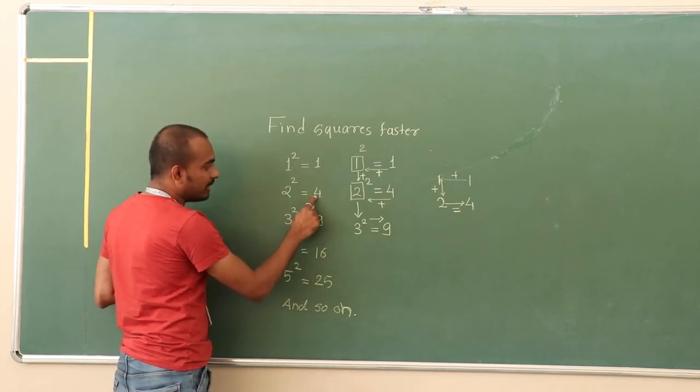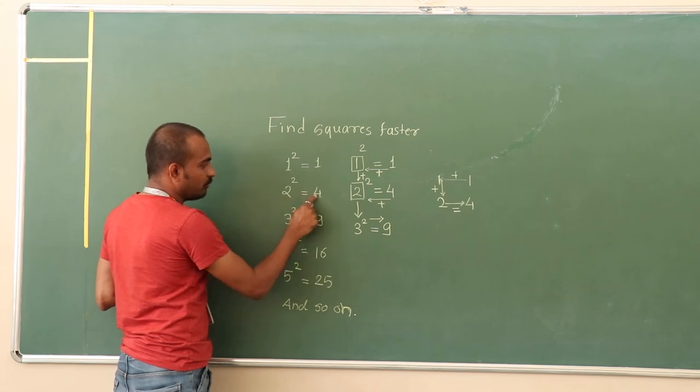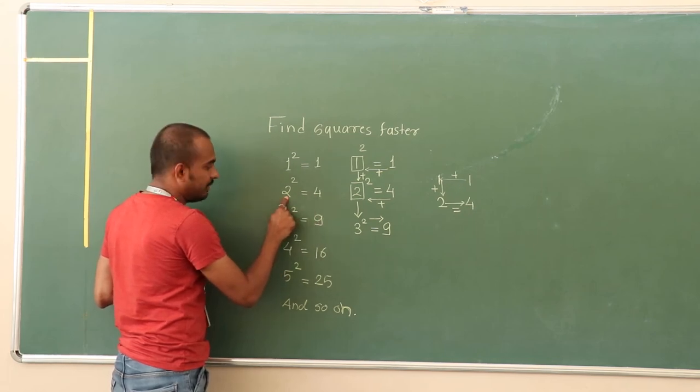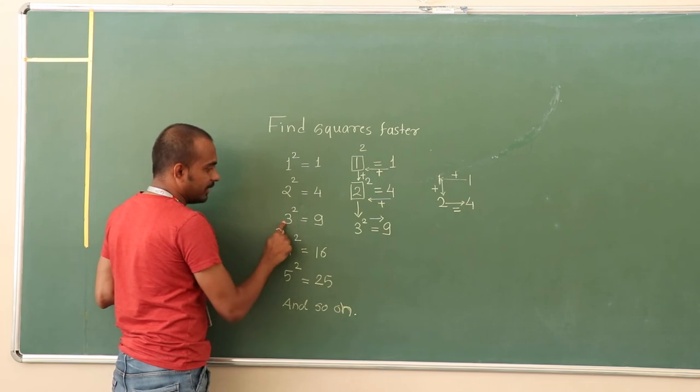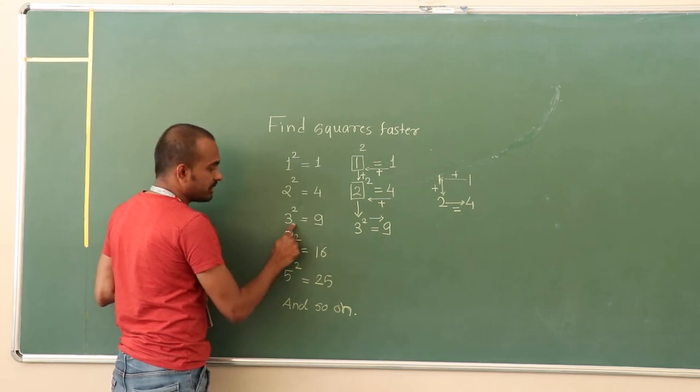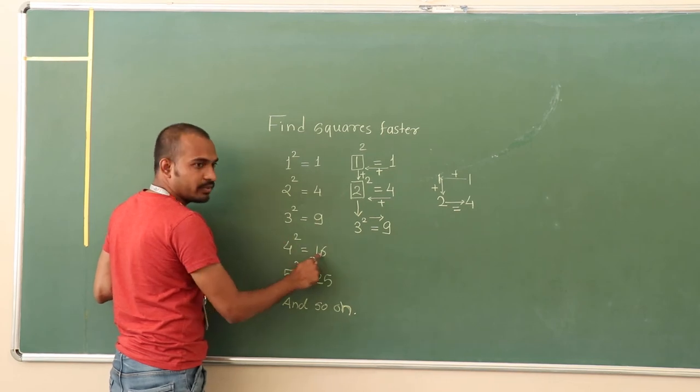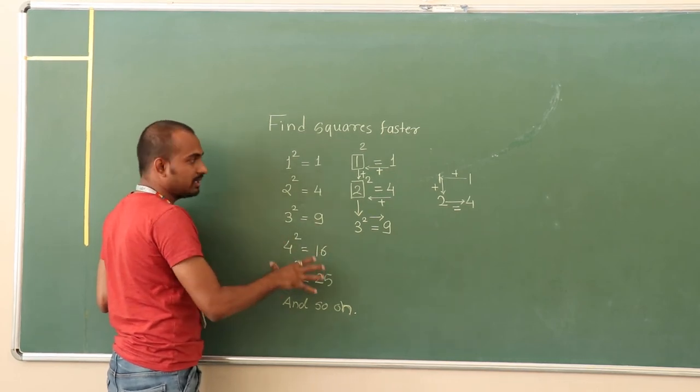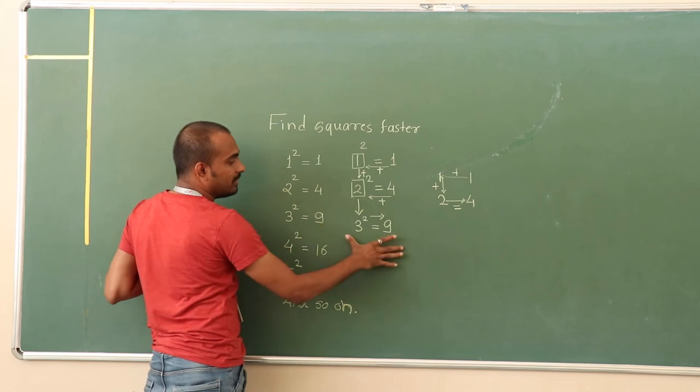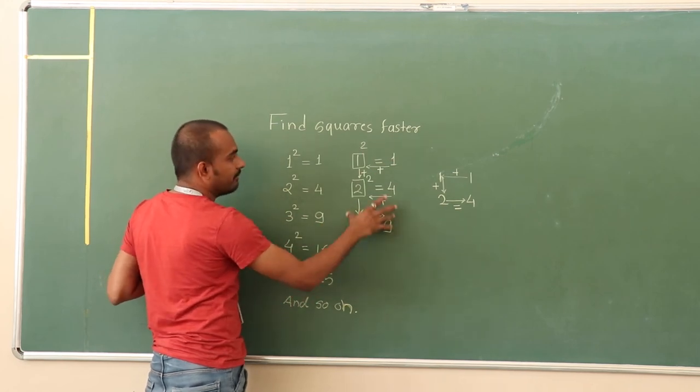Next, if I add this 4 with 2, so 4 plus 2 becomes 6. And if I add 3 to the 6, it becomes 9, which is nothing but square of 3. So by adding in this pattern, we are going to get the square of the number. The pattern or the sequence I have written here.